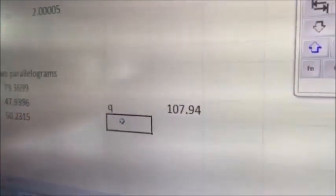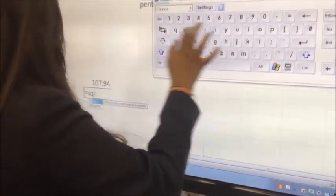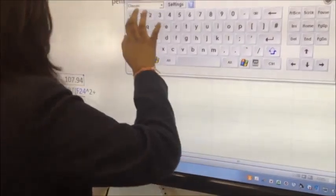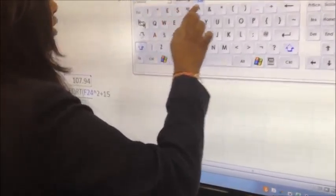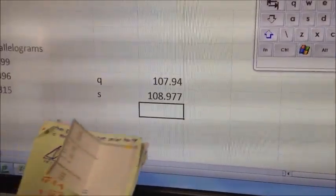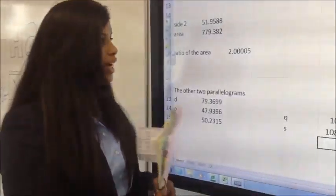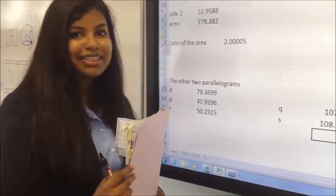Now, we'll enter that, and we should get 107.94 rounded up, and S would be equals square root, Q squared, add 15 squared, which would be 108.977. So, these are the dimensions, and Sharanya and Debbie will now show you the final parallelograms.